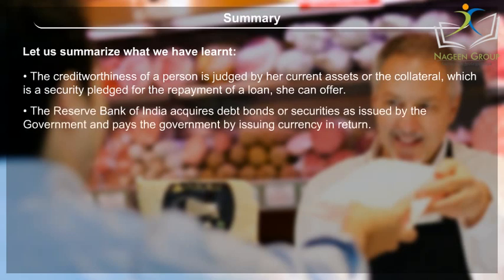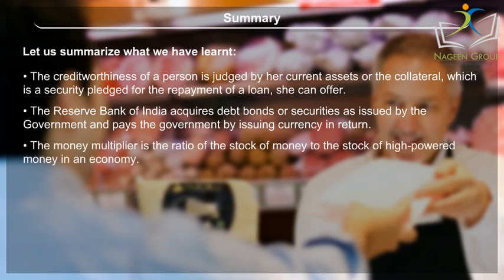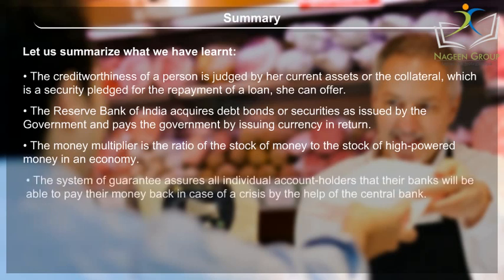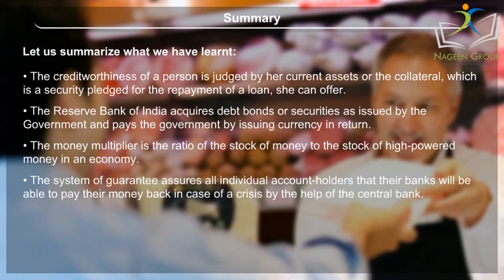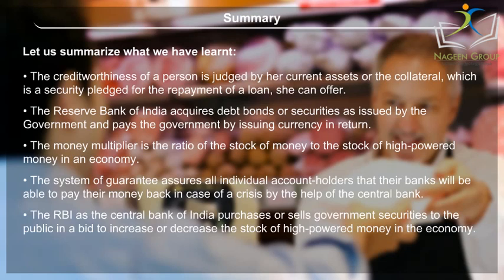The creditworthiness of a person is judged by their current assets or collateral, which is a security pledged for the repayment of a loan. The Reserve Bank of India acquires debt bonds or securities issued by the government and pays the government by issuing currency in return. The money multiplier is the ratio of the stock of money to the stock of high-powered money in an economy. The system of guarantee assures all individual account holders that their banks will be able to pay their money back in case of a crisis with the help of the central bank. The RBI purchases or sells government securities to the public to increase or decrease the stock of high-powered money in the economy.